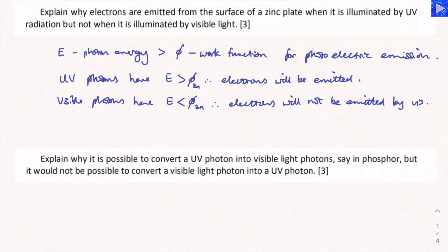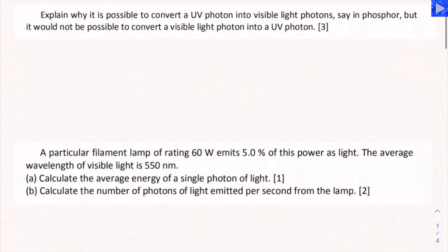So those are our three points we'd want to make regarding this question. UV photons have energy larger than the work function, therefore electrons will be emitted by UV radiation. Visible photons have energy less than the work function, therefore electrons will not be emitted by visible radiation. Let's go to the next question.